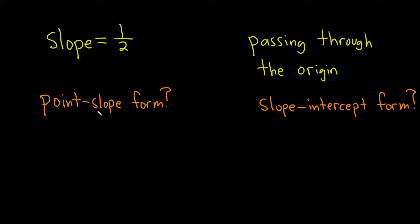In this problem, we're given some information about a line. We're told that it has a slope of one-half and it passes through the origin. And there's two questions. We have to find the point-slope form and the slope-intercept form.